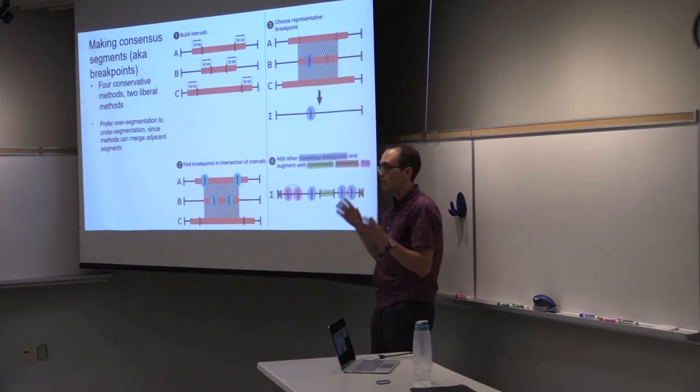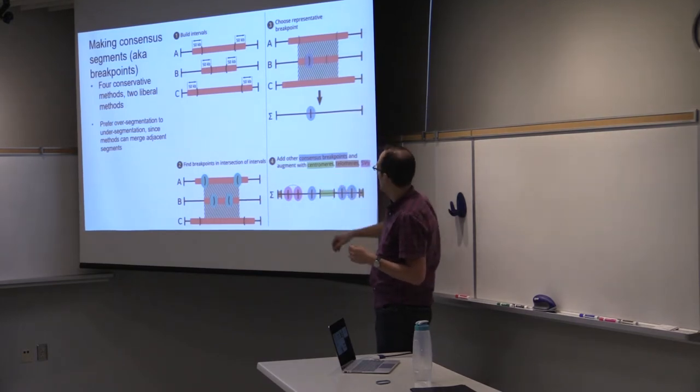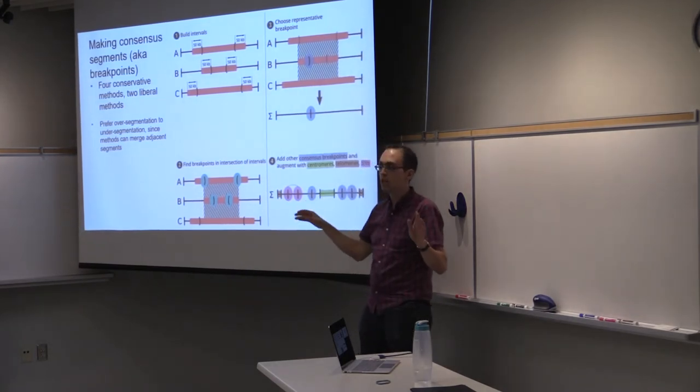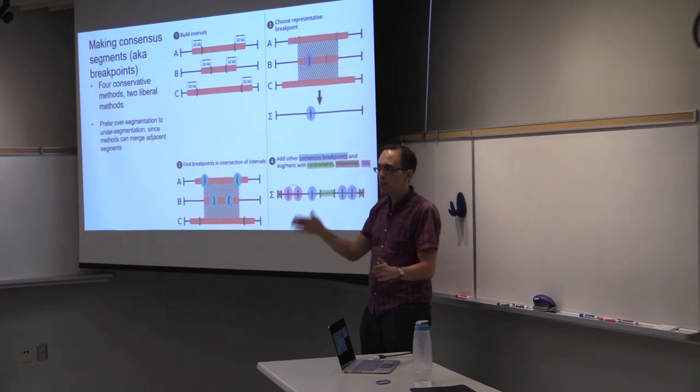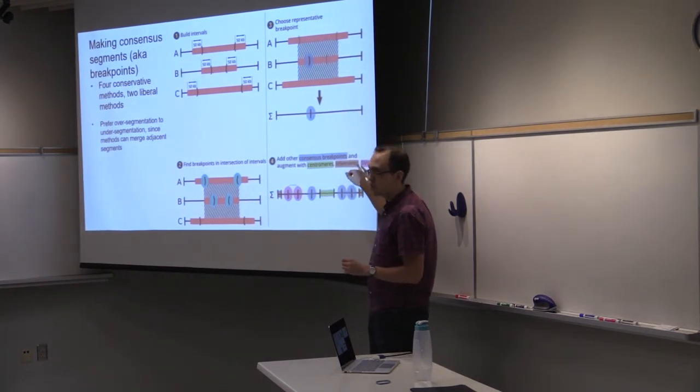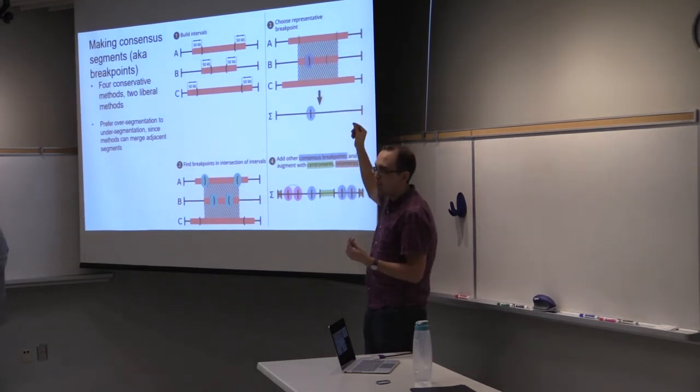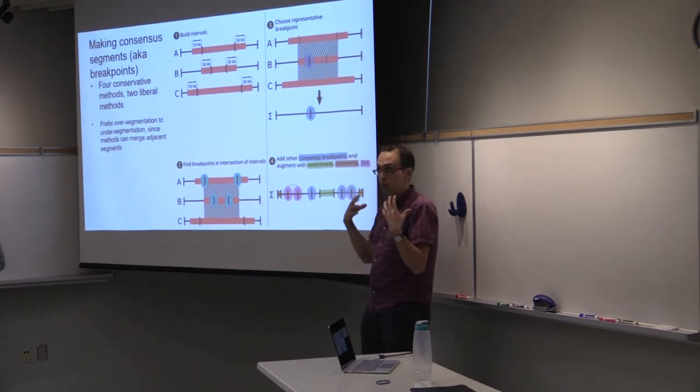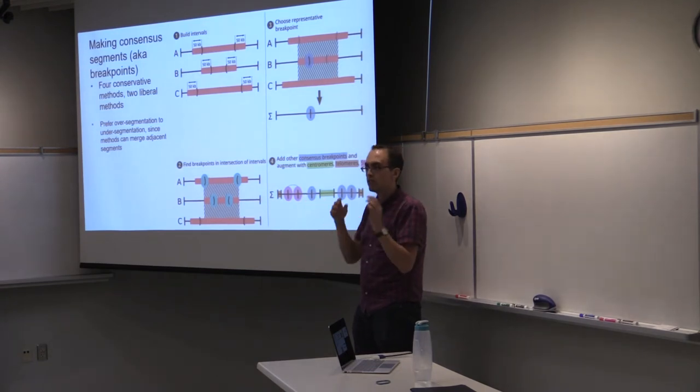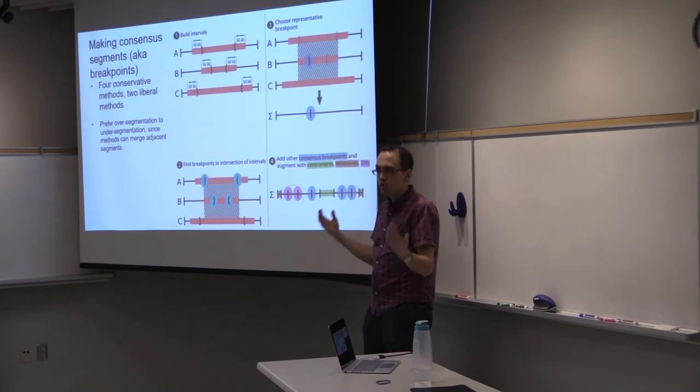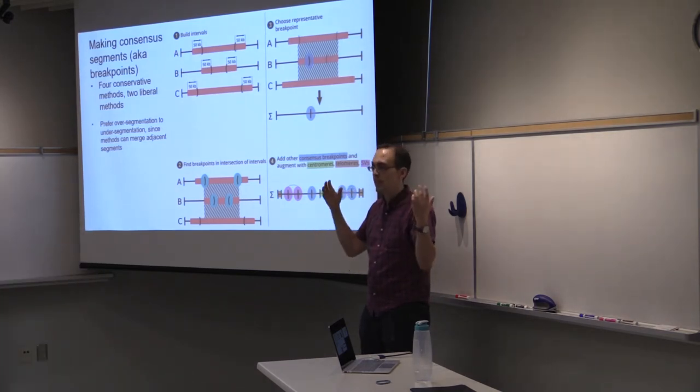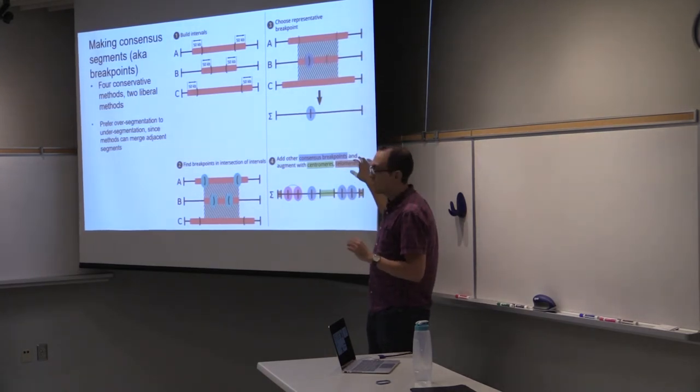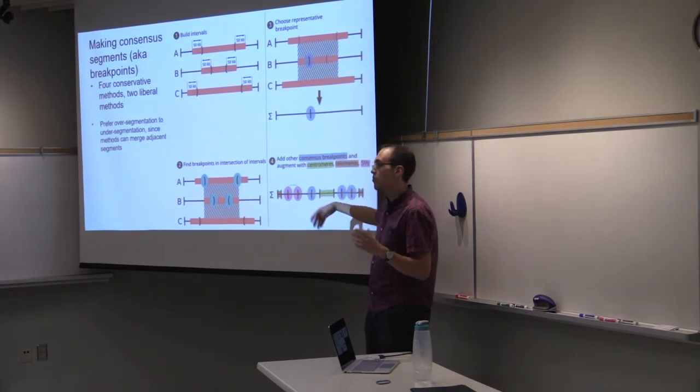We also augment this consensus segmentation with other information we have. This incorporates centromeres and telomeres. These are regions where you don't have data, you shouldn't be able to call copy number. So let's put breakpoints surrounding these regions. We also add in the structural variants, because remember every copy number breakpoint should have an associated structural variant. There's a whole other group that was dedicated to just calling structural variants. They pursued their own consensus strategy with their own set of algorithms and developed a consensus strategy to be one final set of structural variants that everyone in PCAWG would use. We take their consensus SVs and then use those breakpoints, which is exactly what we did.